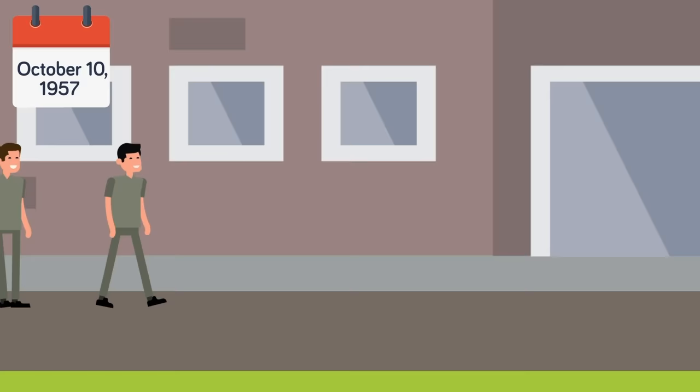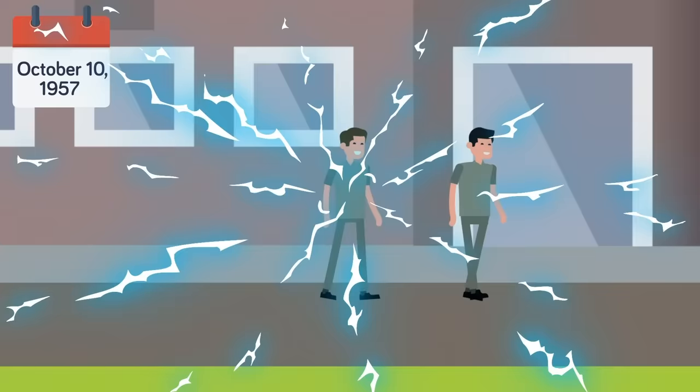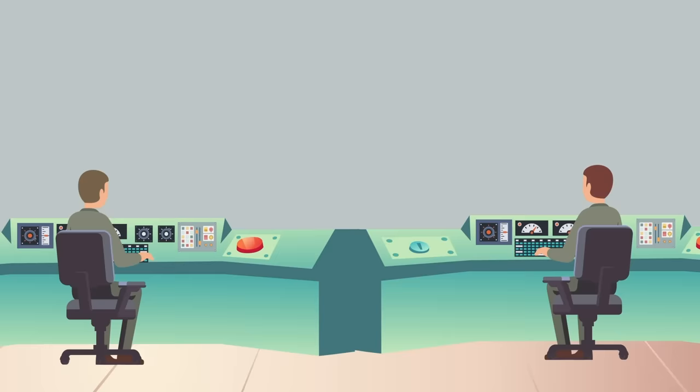On October 10, 1957, Britain's first nuclear reactor, known as Windscale, was working to create more material for their nuclear weapons program. The facility had been running since the 40s without any problems, but on this day, things went terribly wrong.